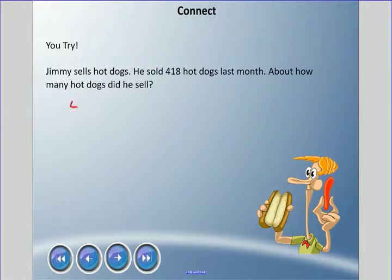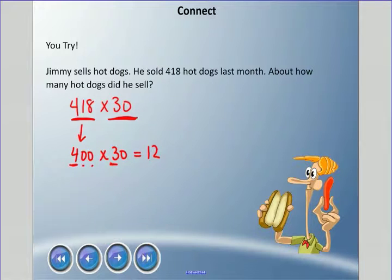All right, so we have 418, and we're going to multiply this for the exact answer times 30, 30 days in a month. 30 is actually a pretty easy number to work with right away, but we should probably change this 418 to 400, an easier number to go with. We're going to multiply that by 30. If you remember from the last lesson, we multiply the first two numbers, 4 times 3 is 12, and we add how many zeros, one, two, three. So he sold about 12,000 hot dogs last month.